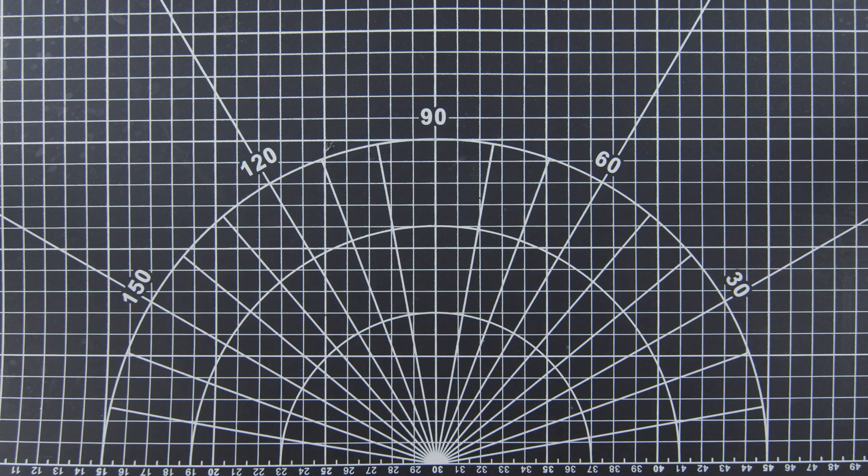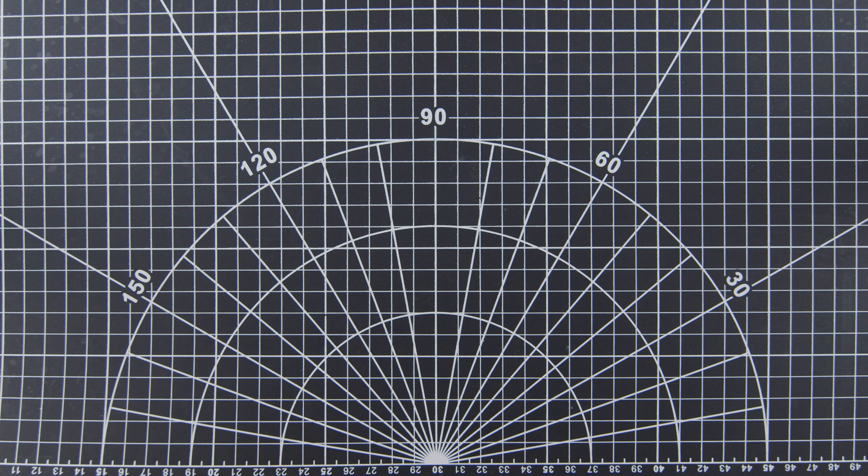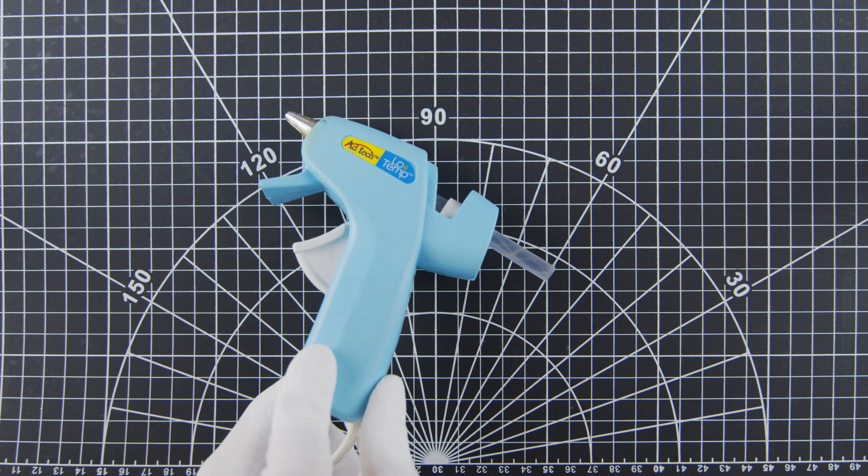I also got a compass and this hot glue gun. The low temperature variant is better since we don't want to risk melting the plastic or demagnetizing the stir bar.